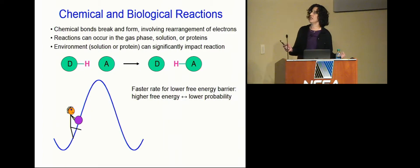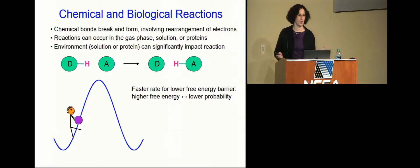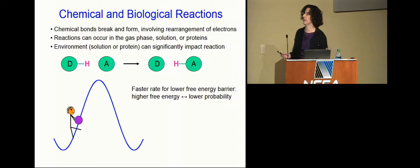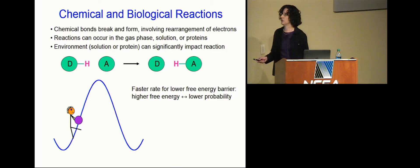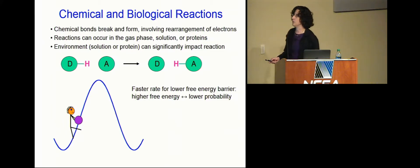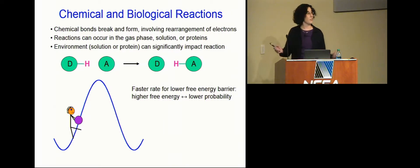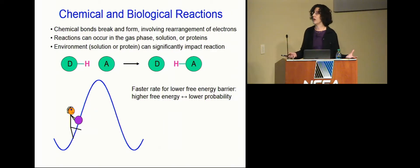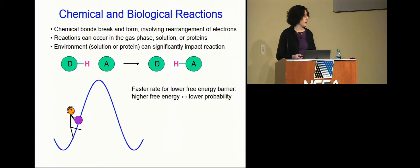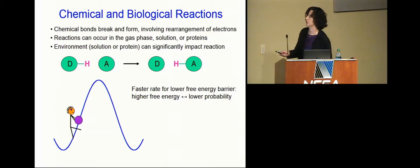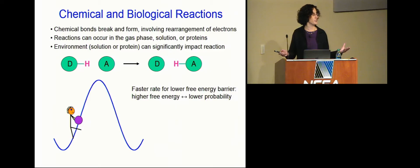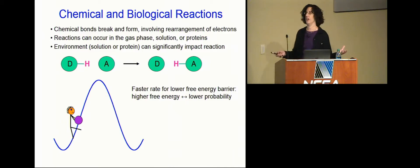I'm interested in studying chemical and biological reactions. The challenge here is that chemical bonds are breaking and forming, and this involves the rearrangement of electrons. For example, if a hydrogen transfers from a donor to an acceptor, we need to break the bond with the donor and form the bond with the acceptor, and that involves electrons as well as nuclei. These reactions can occur in the gas phase, in solution, or in proteins. The environment can significantly impact the reaction, meaning we have very large systems — hundreds or hundreds of thousands of atoms.